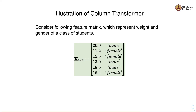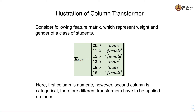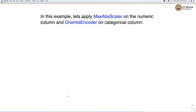Consider the following feature matrix as a concrete example. We have six samples and two features. The first feature represents the weight and the second feature represents the gender of students in the class. The first column is numeric and the second column is categorical, so we need different transformers on each of these features.